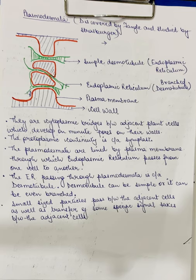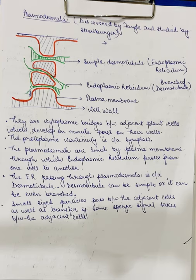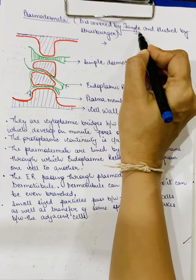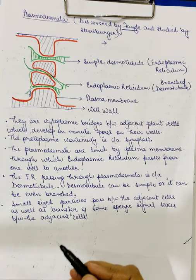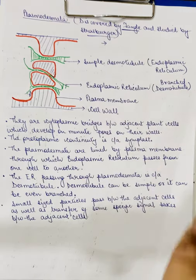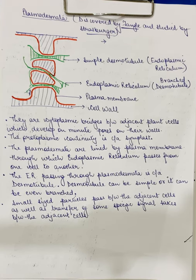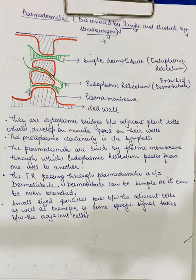Now, we will be studying about certain structures related to the cell wall. The first one is plasmodesmata. Plasmodesmata is a structure present between two adjacent cells. It was first discovered by a scientist named Tangle and then further studied by Strasburger — the same Strasburger who gave us the terms cytoplasm and nucleoplasm.